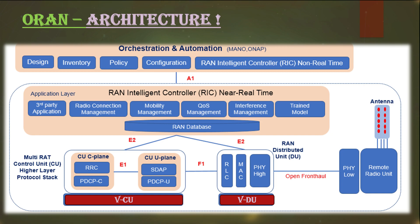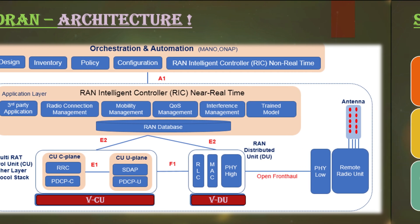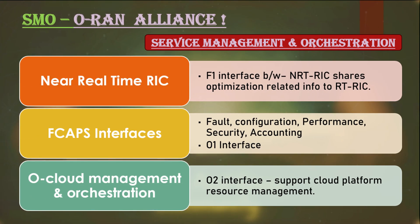Another important element is orchestration, which helps configure and design the radio access network much more quickly than in traditional RAN, where this process is lengthy. O-RAN also introduces new interfaces in the architecture such as O1 and E2. Let's talk a bit about SMO — Service Management and Orchestration — and some new interfaces introduced in O-RAN Alliance architecture.